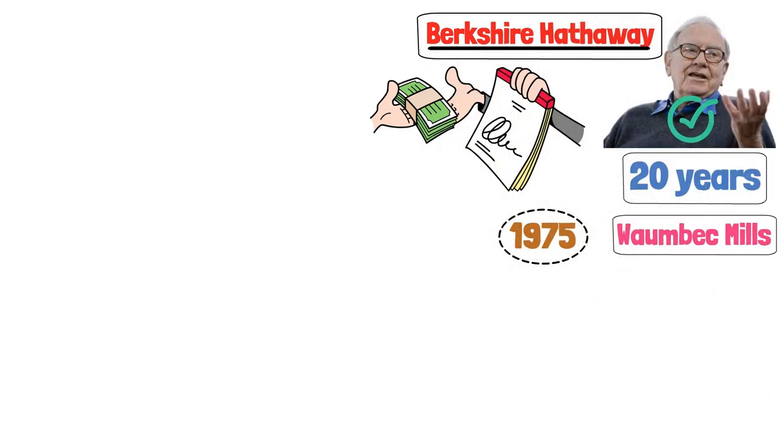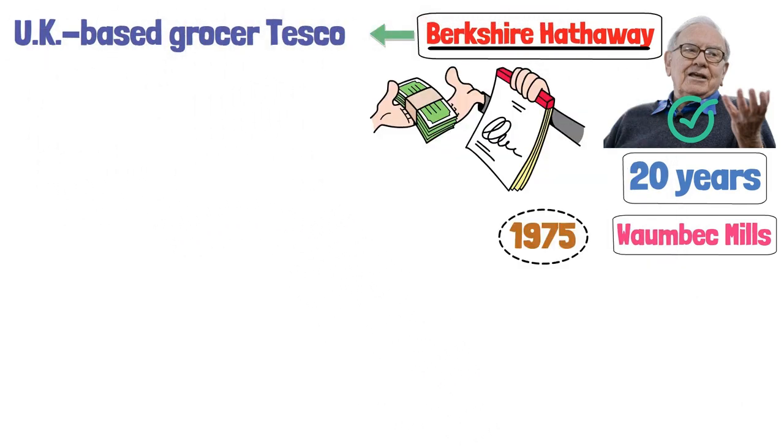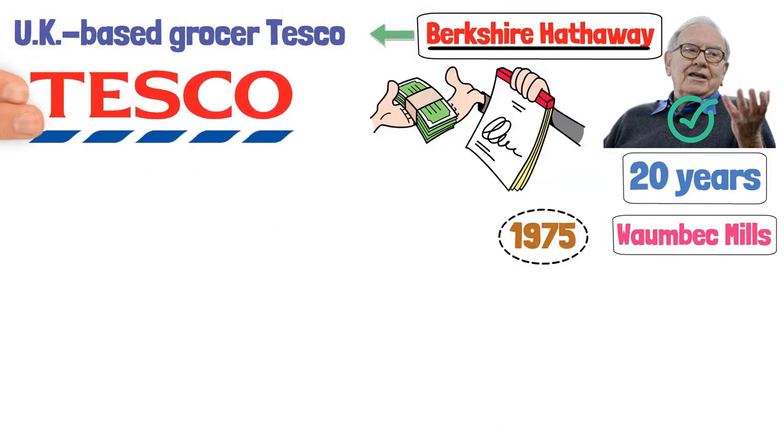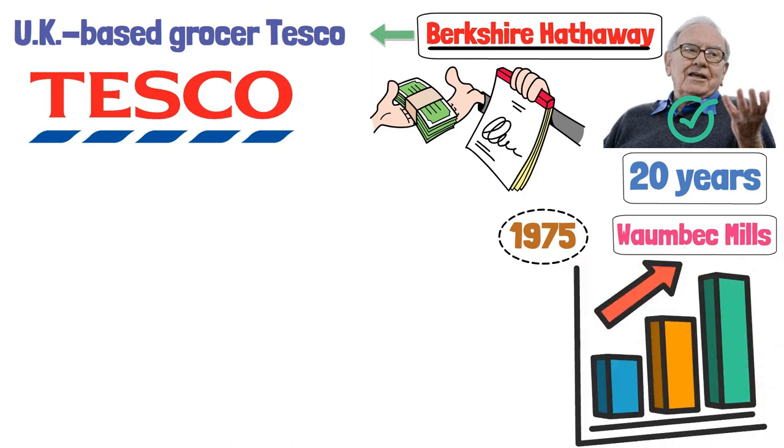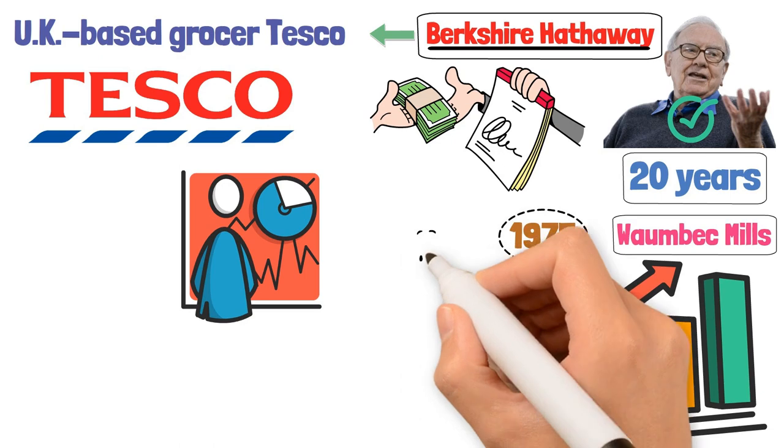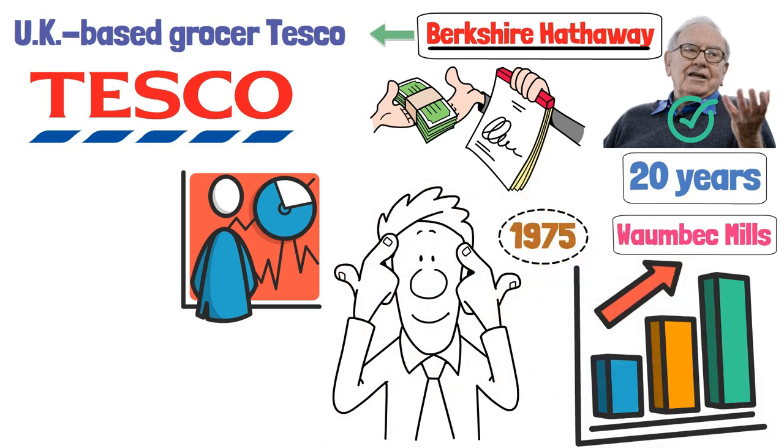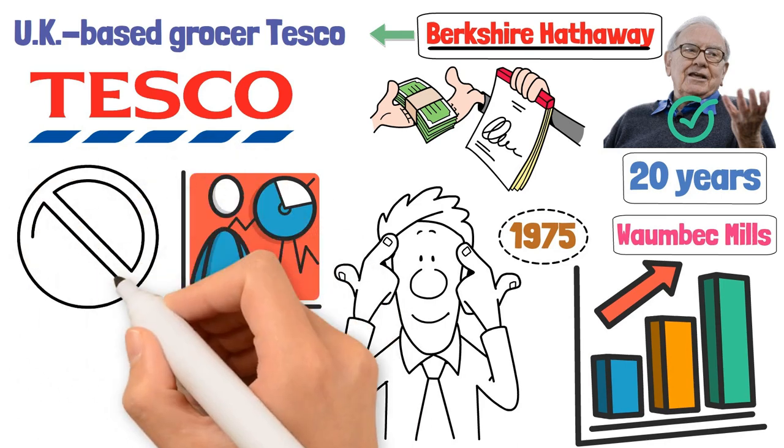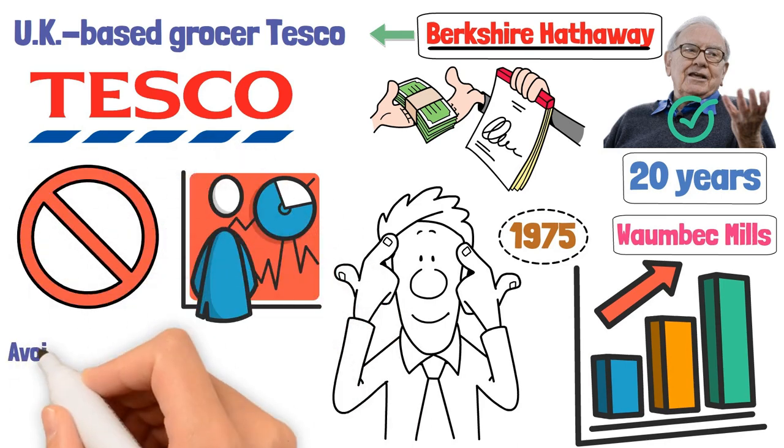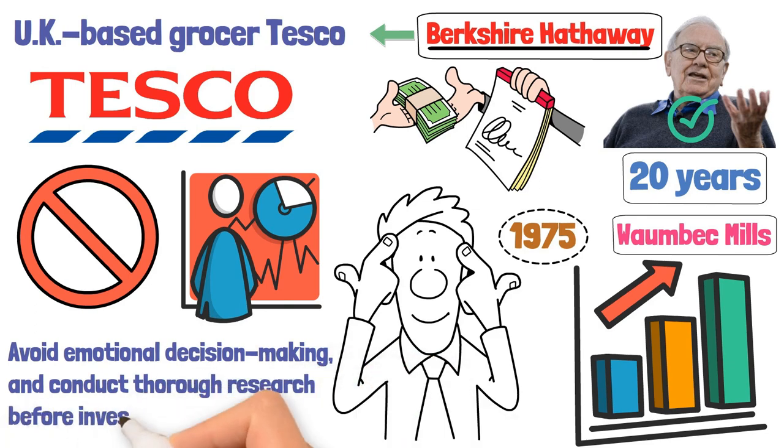Berkshire Hathaway owned a significant number of shares in the UK-based grocer Tesco. The investment turned sour when Tesco overstated its profits, leading to a tumble in share prices. Now these stories serve as a reminder that even the most successful investors can make mistakes. The key takeaway is to learn from these errors, avoid emotional decision making, and conduct thorough research before investing.